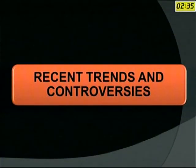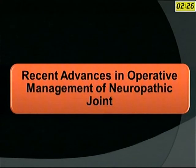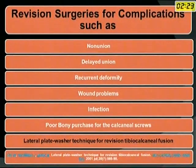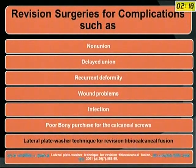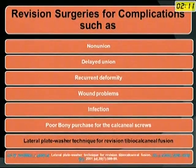Recent trends and controversies: use of a retrograde nail for ankle arthrodesis — a limb salvage procedure — is one of the most effective techniques for an unstable ankle. Recent advances in operative management: revision surgeries are usually indicated for non-unions, delayed unions, recurrent deformities, wound problems, infections, and poor bony purchase for the calcaneal screws. Lateral plate washer techniques are used for revision tibiocalcaneal fusions.